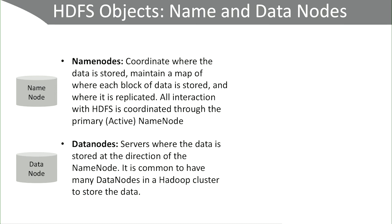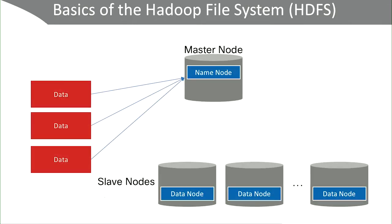Name nodes are typically stored in a redundant fashion — you'll have one, two, or three of them for redundancy, whereas data nodes you can have literally hundreds or even thousands of. Let's look at the basics of how we would actually write a file block into the Hadoop system.